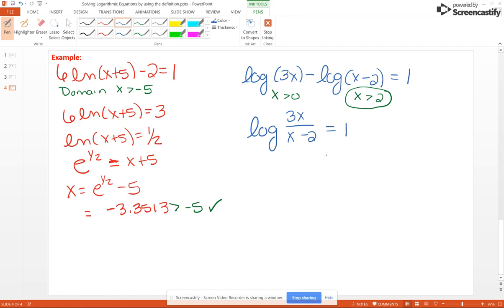Once you have that one log term isolated, then the base of the common log is 10. So we have 10 to the first power equals 3x over x minus 2. And when we're solving things that have variables in the denominators, we take the LCD and multiply to both sides. So 10 times x minus 2 equals 3x because the x minus 2's will cancel.